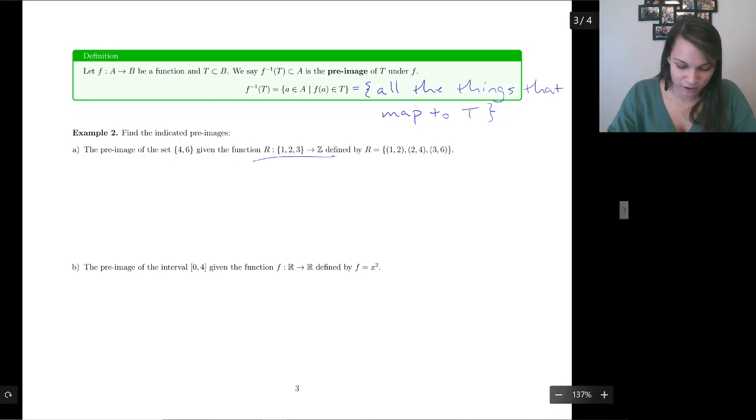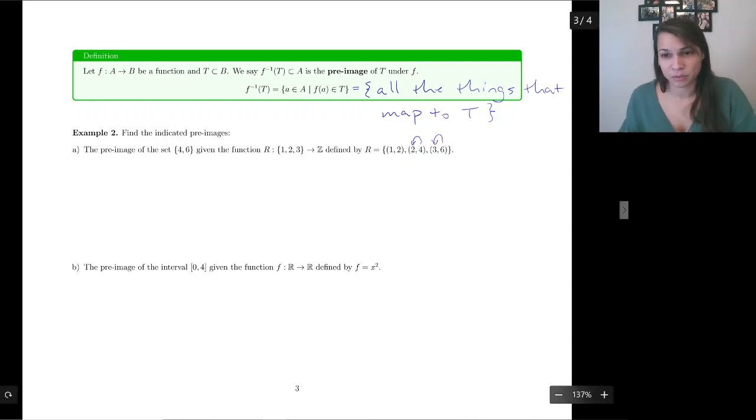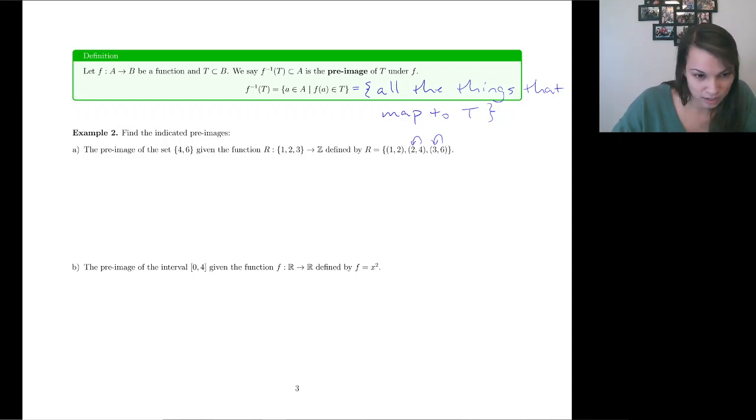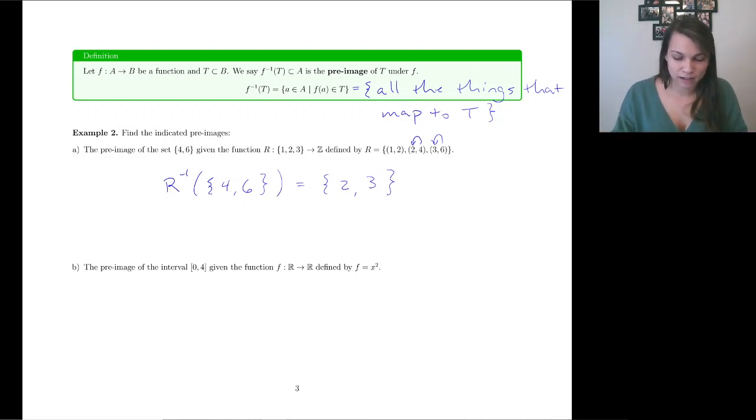So here are some familiar functions. For part A, we are now going to find the pre-image of this set {4, 6}. So four got mapped to by the number two. Six got mapped to by the number three. So the pre-image, r^(-1) of {4, 6} is going to be the set {2, 3}. Not too hard. Kind of probably what we expected.